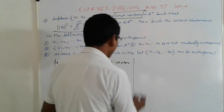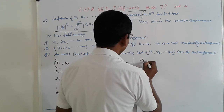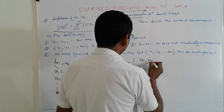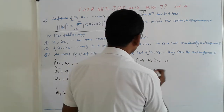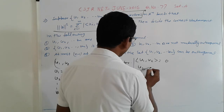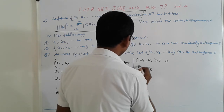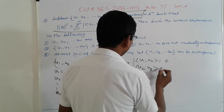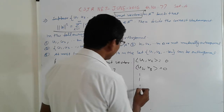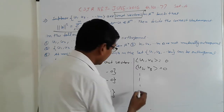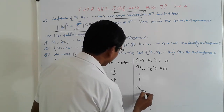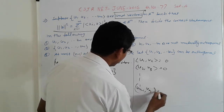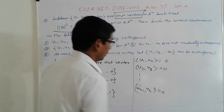So simply find out the inner product of V1 and V2. Then we get 0. V2, V3, V0 and so on — all these inner products, including V(n-1) and Vn, also give 0.